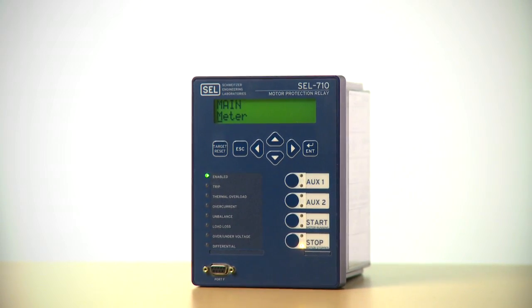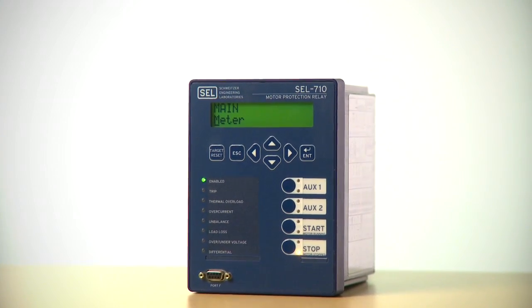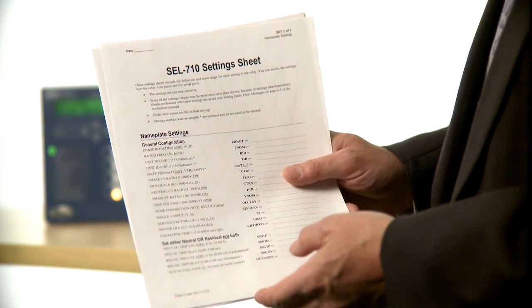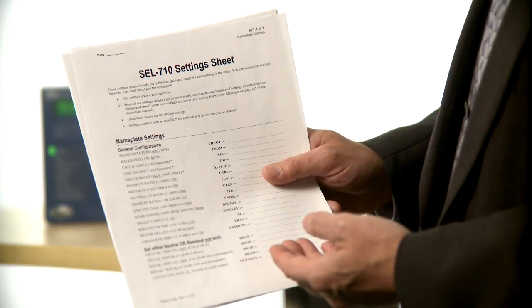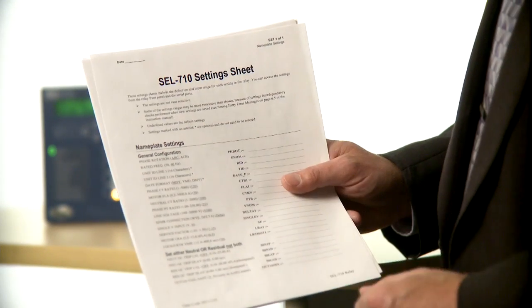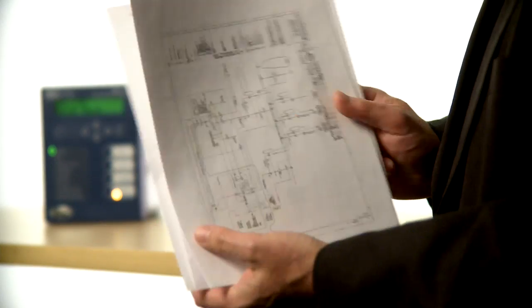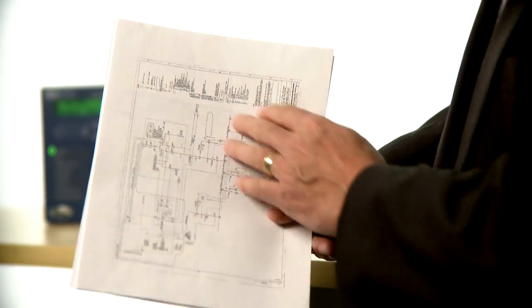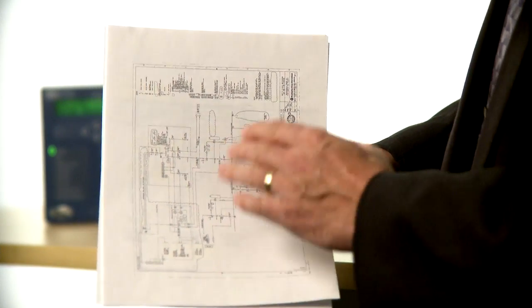There's some basic information you'll need to set the nameplate application. I've printed out the SEL-710 settings sheet and it has all the nameplate information that I'm going to need to fill out. I'm going to need a couple of references to go back and fill in all the information for these key variables. One of those sheets is a motor control center one line diagram and it contains information such as the voltage, the current transformer, and the potential transformer ratios as well as some other motor information.